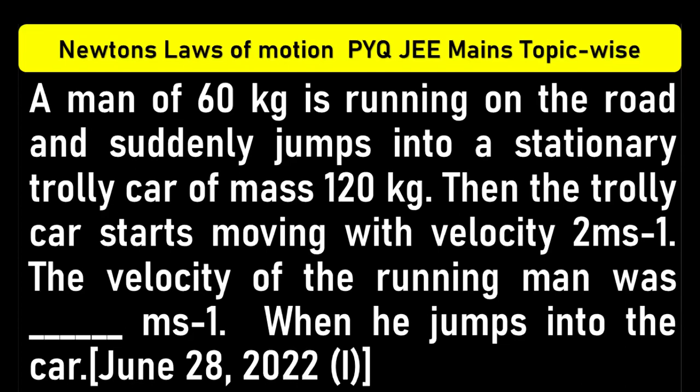A man of 60 kg is running on the road and suddenly jumps into a stationary trolley car of mass 120 kg. Then the trolley car starts moving with velocity 2 meters per second. The velocity of the running man was when he jumps into the car.